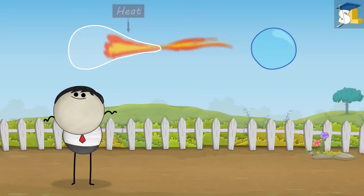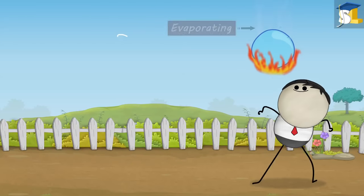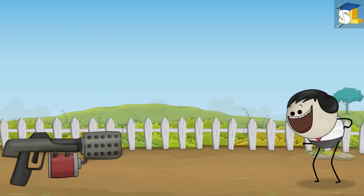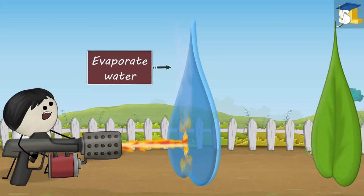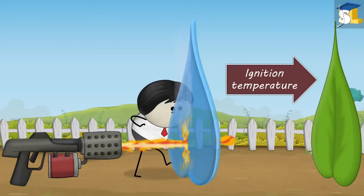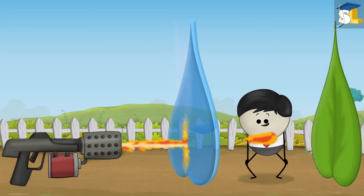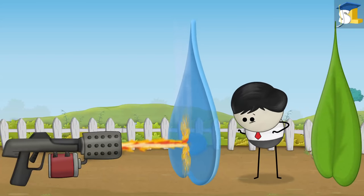Water has a property of absorbing a huge amount of heat before evaporating. Hence, when we try to burn green leaves, a large amount of heat is required to first evaporate the water and then to reach the ignition temperature of leaves, thus not allowing the leaves to catch fire easily.